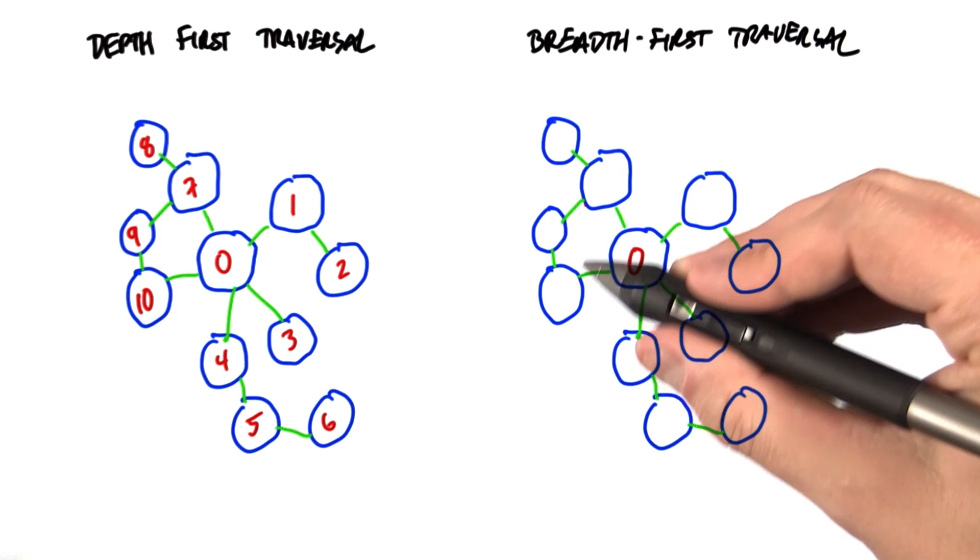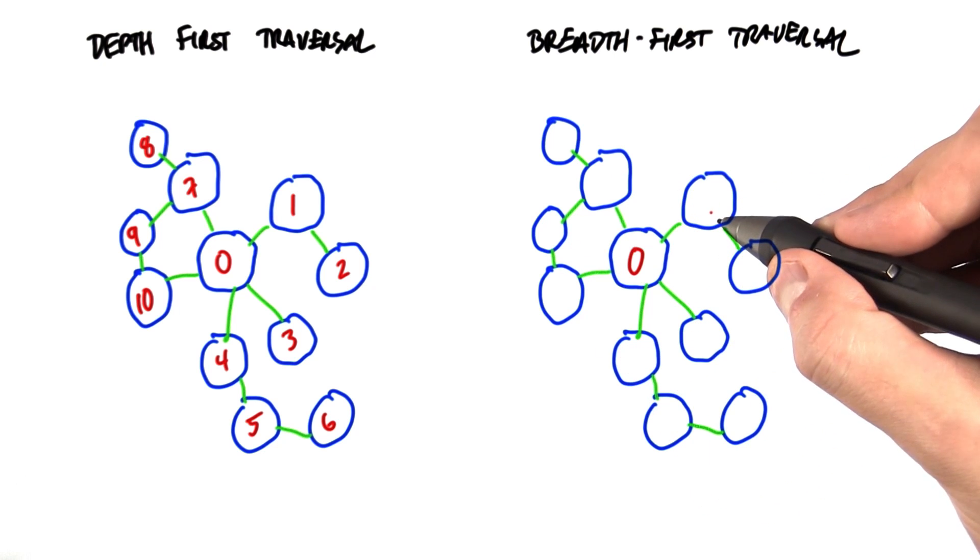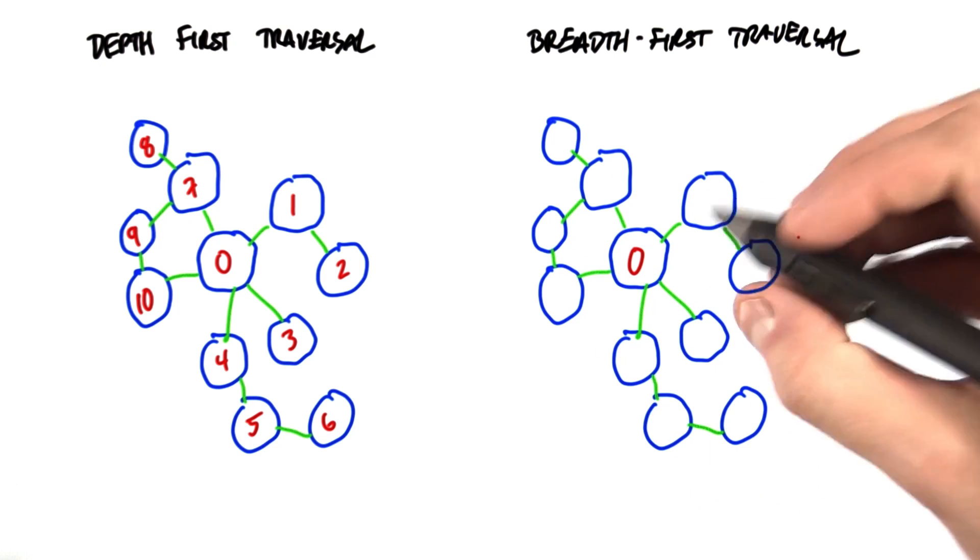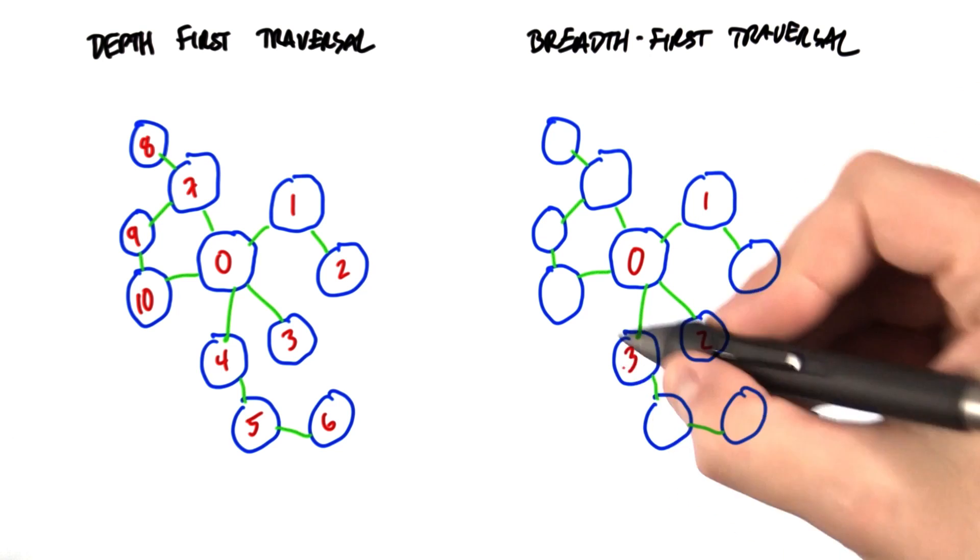what we're going to do is immediately visit all the neighbors that are one hop away before we do any descent at all. So first we're going to visit all the neighbors that are one hop away.